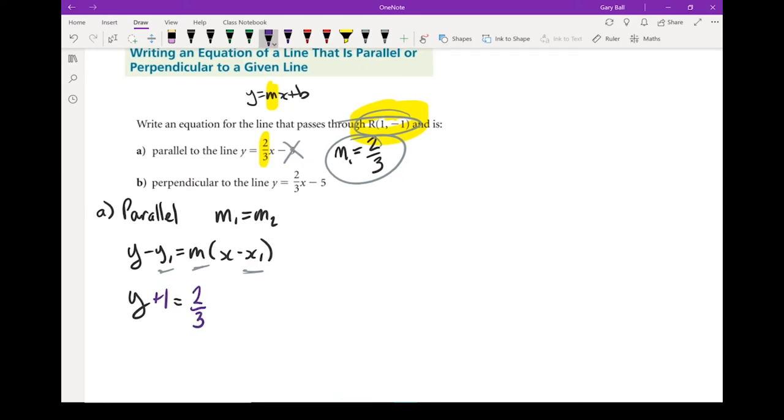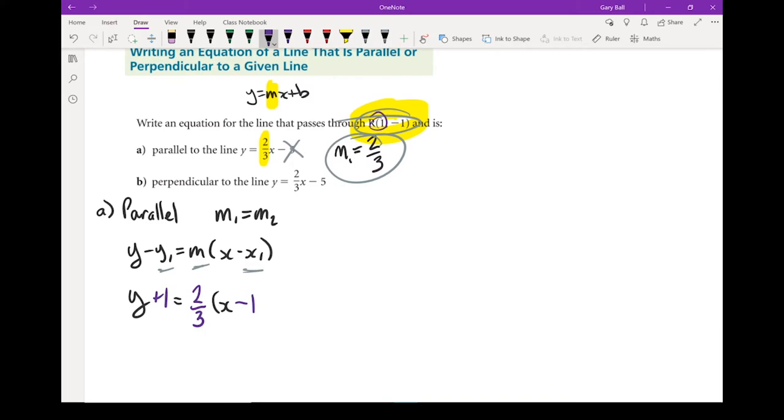Because remember, slope of a parallel line is going to be exactly the same slope as the other one. And instead of x1, I'm going to put whatever my x value is and the opposite sign. So it's going to be minus 1. There's my equation of the parallel line.